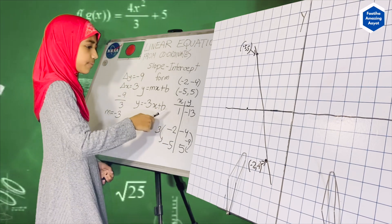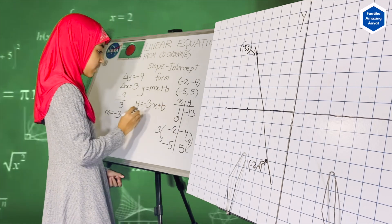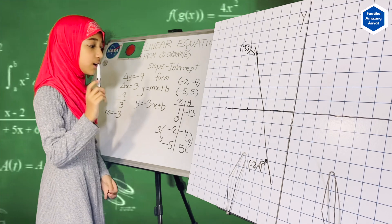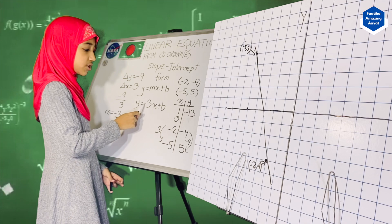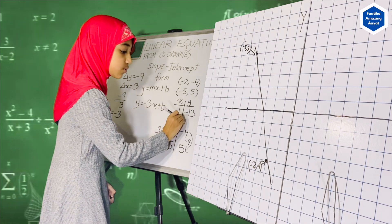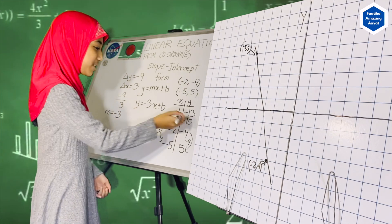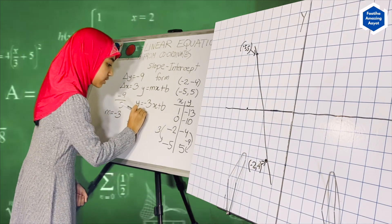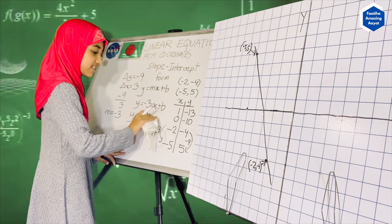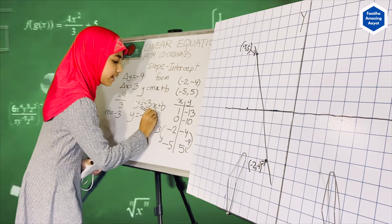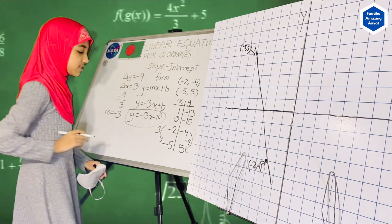We have to reach x equals 0 in order to figure out our b. We already know that when x decreases by 1, the change in y is minus 3. So when x is 0, y will be minus 10. We already figured out what our b is — our b is minus 10. So y equals minus 3x minus 10. This is our slope-intercept equation!